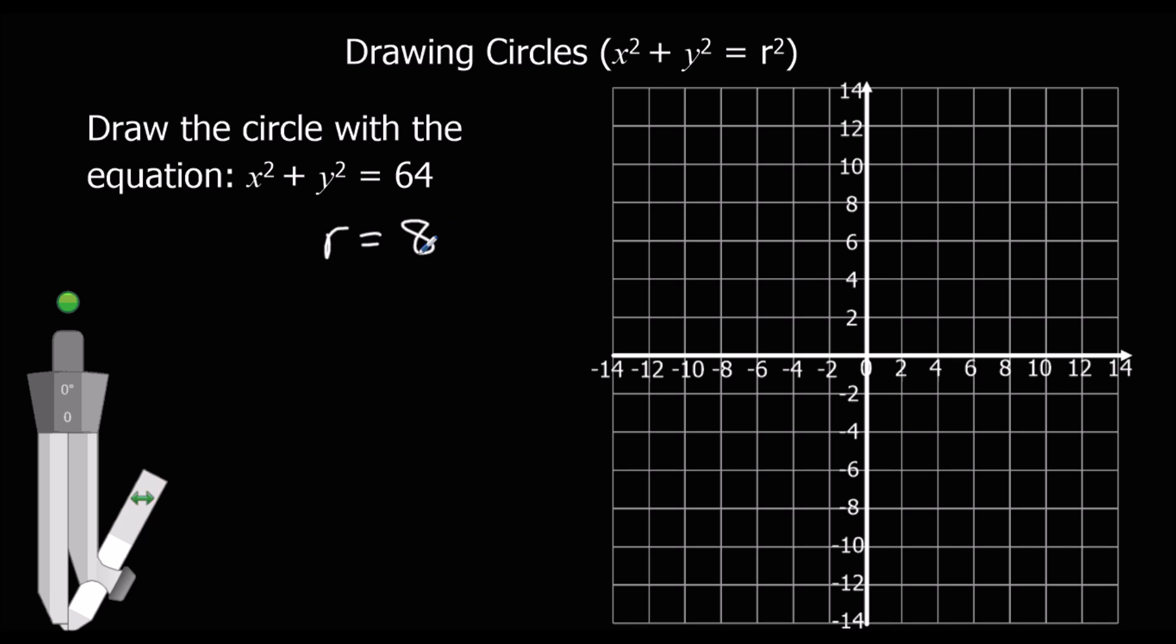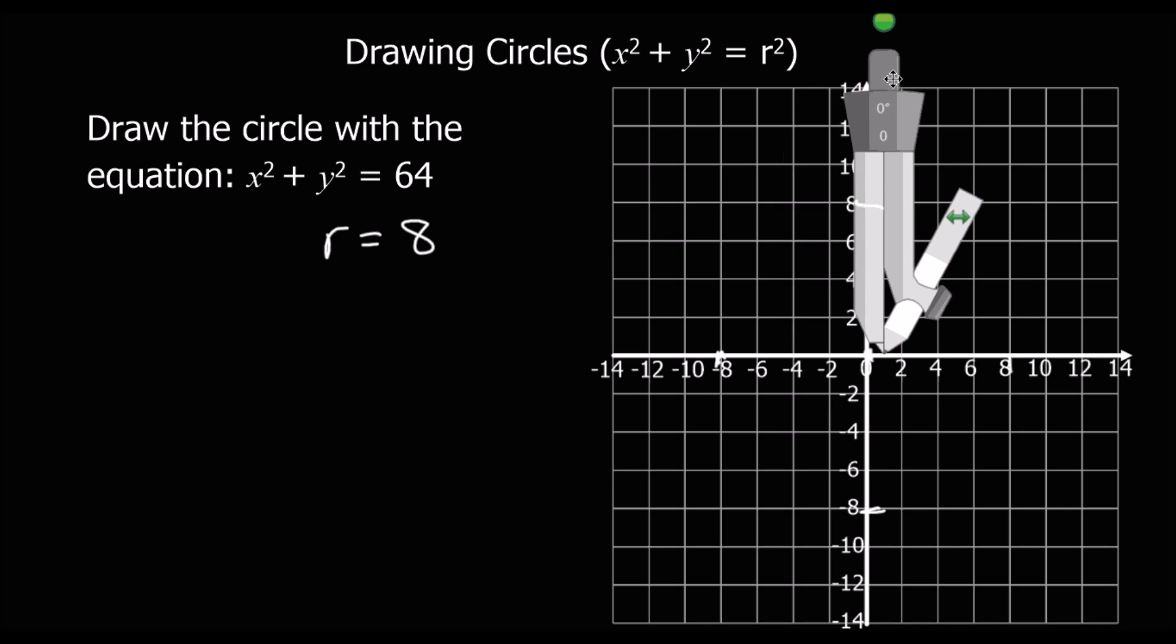So we're going to have a circle center 0, and it's going to go through 8, minus 8, 8, and minus 8. It's going to be 8 away on every side. We're going to try and draw a circle, although it might miss.